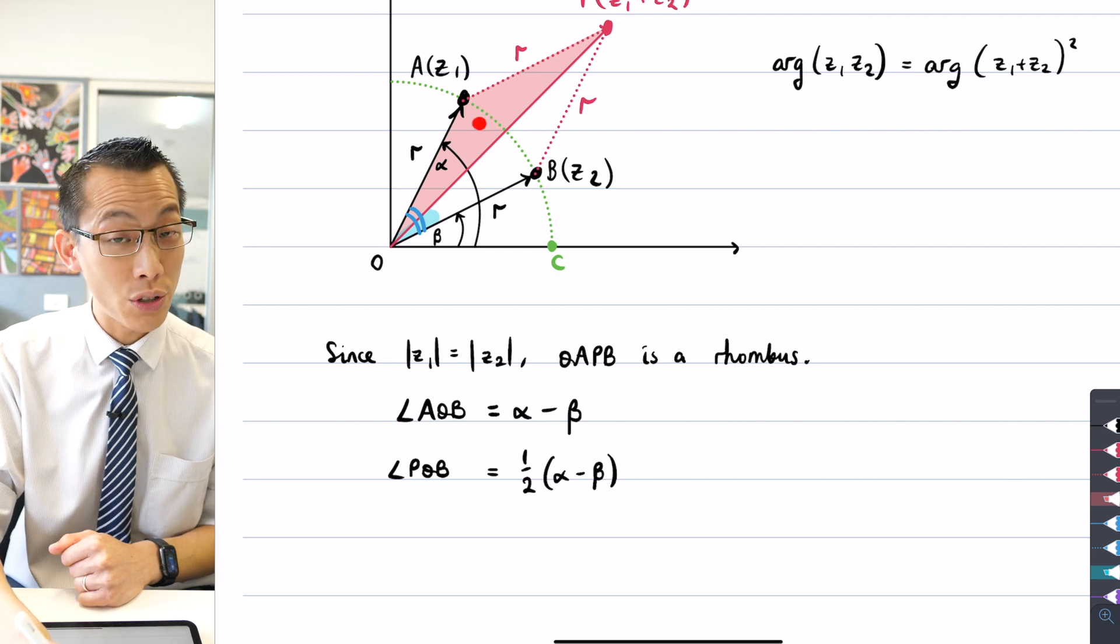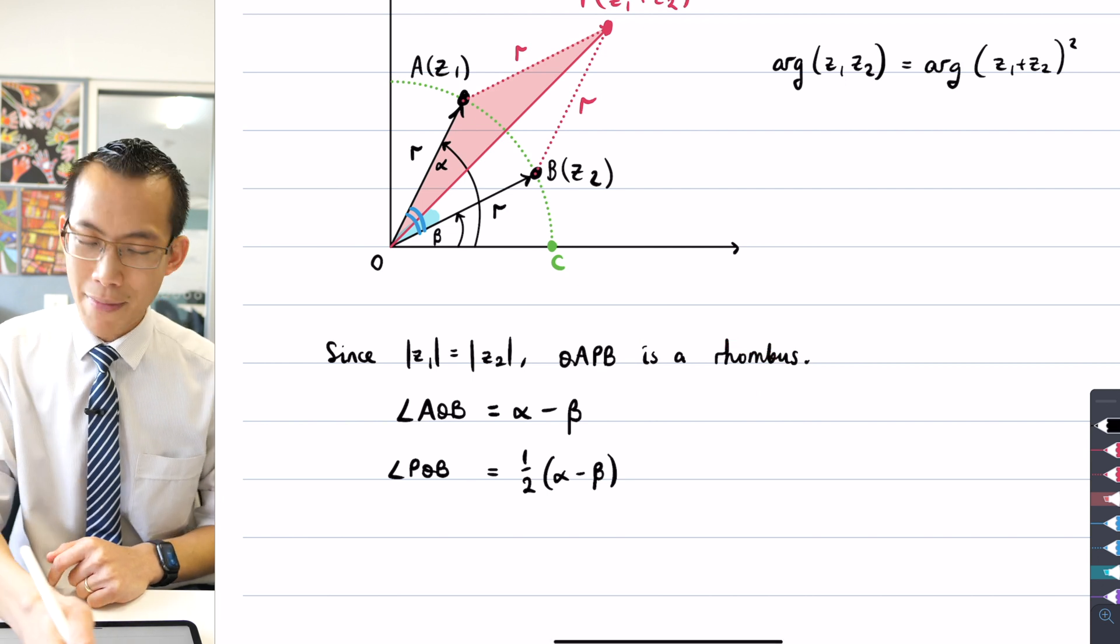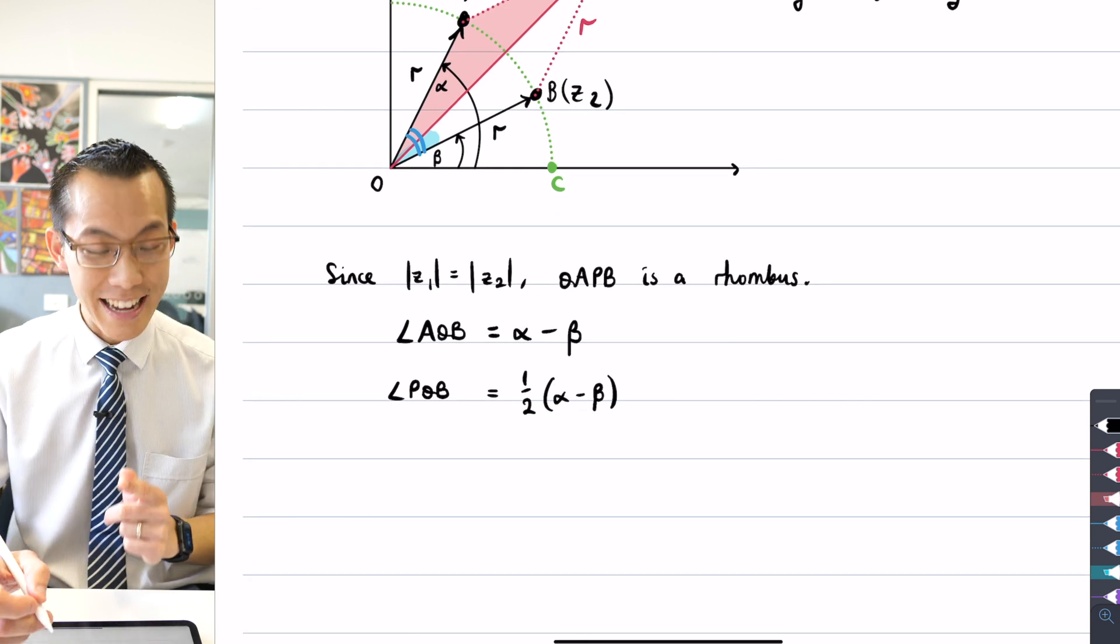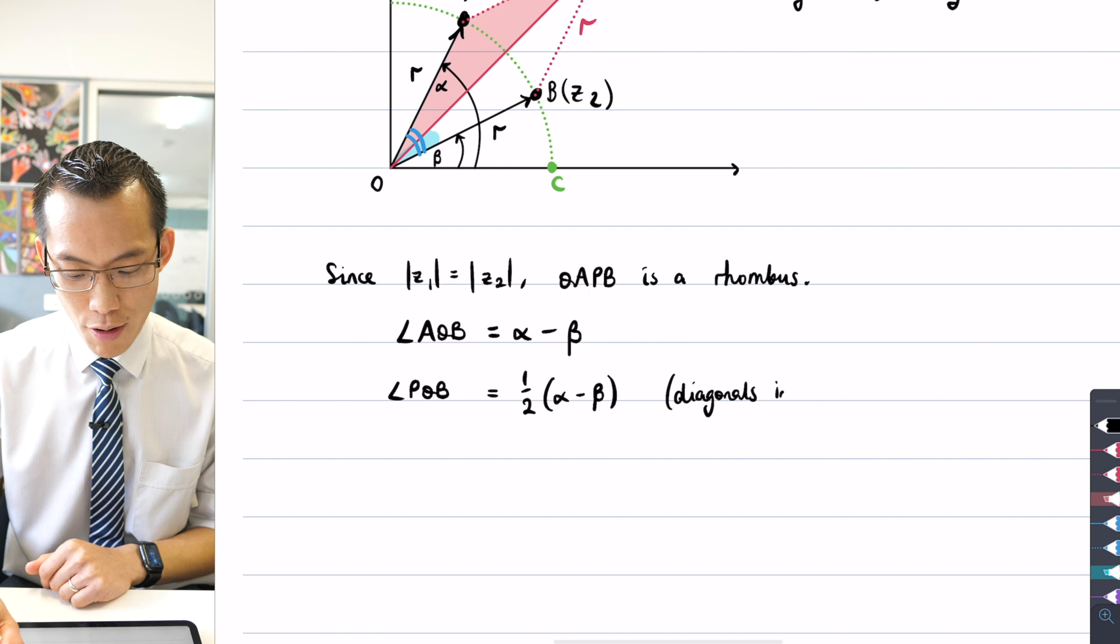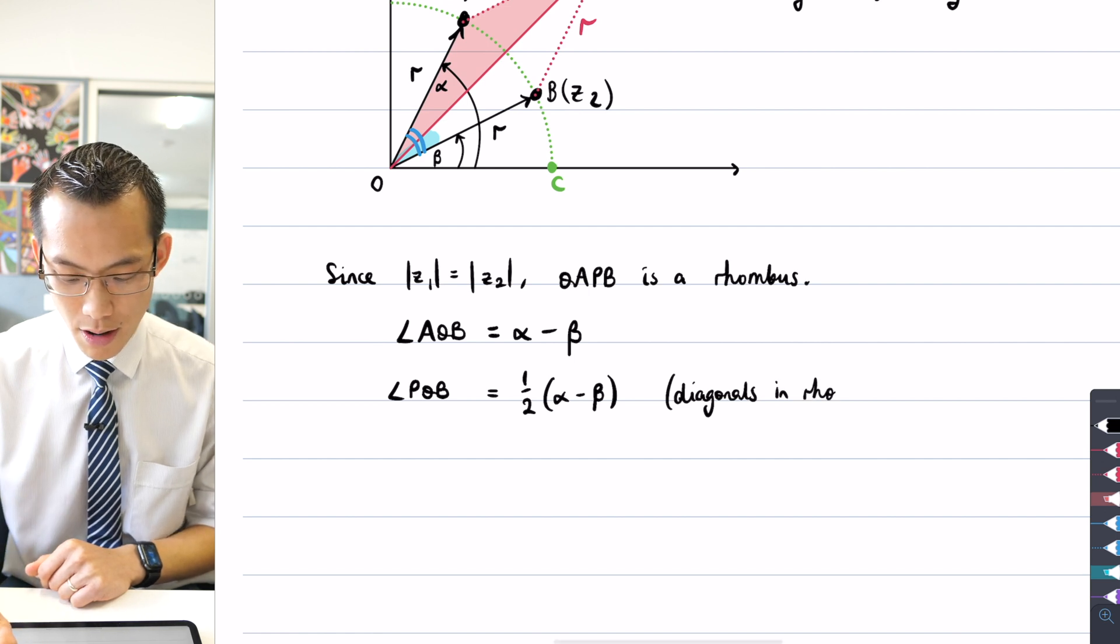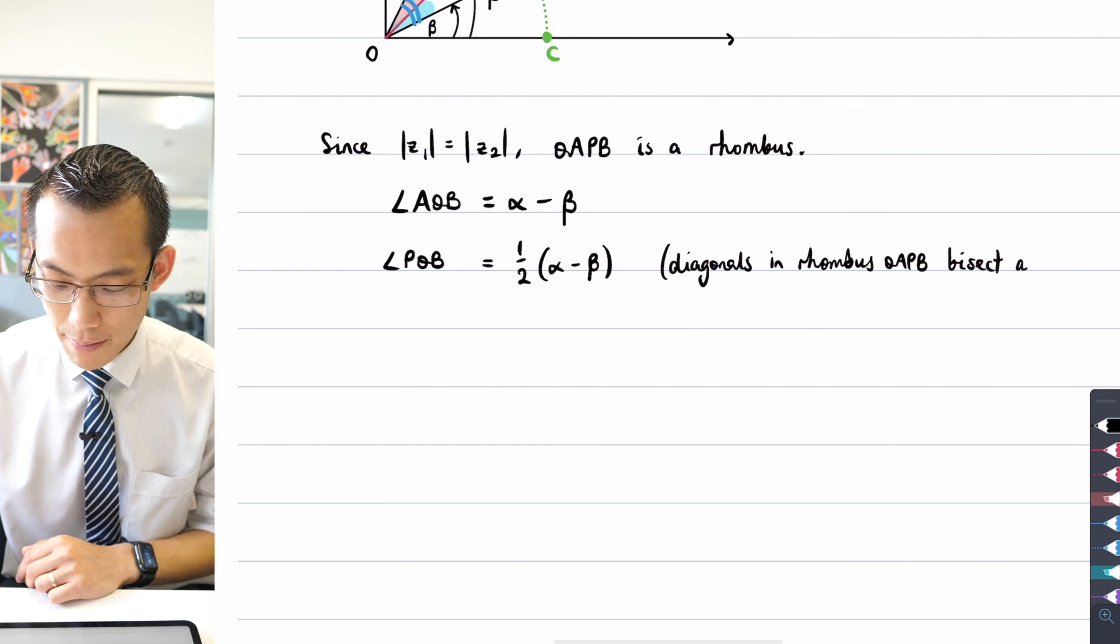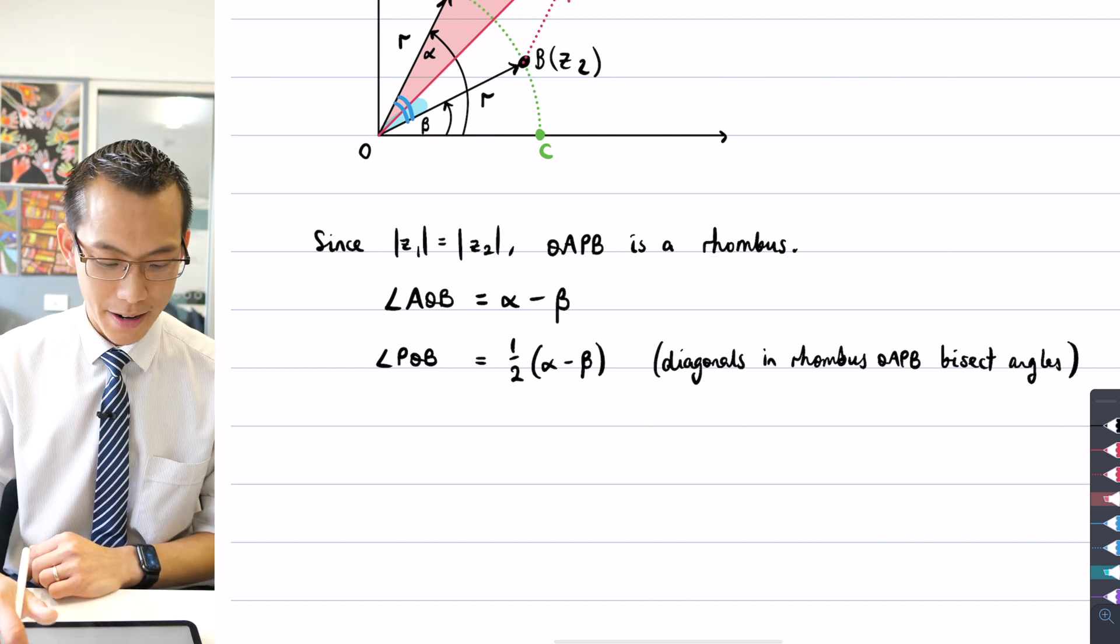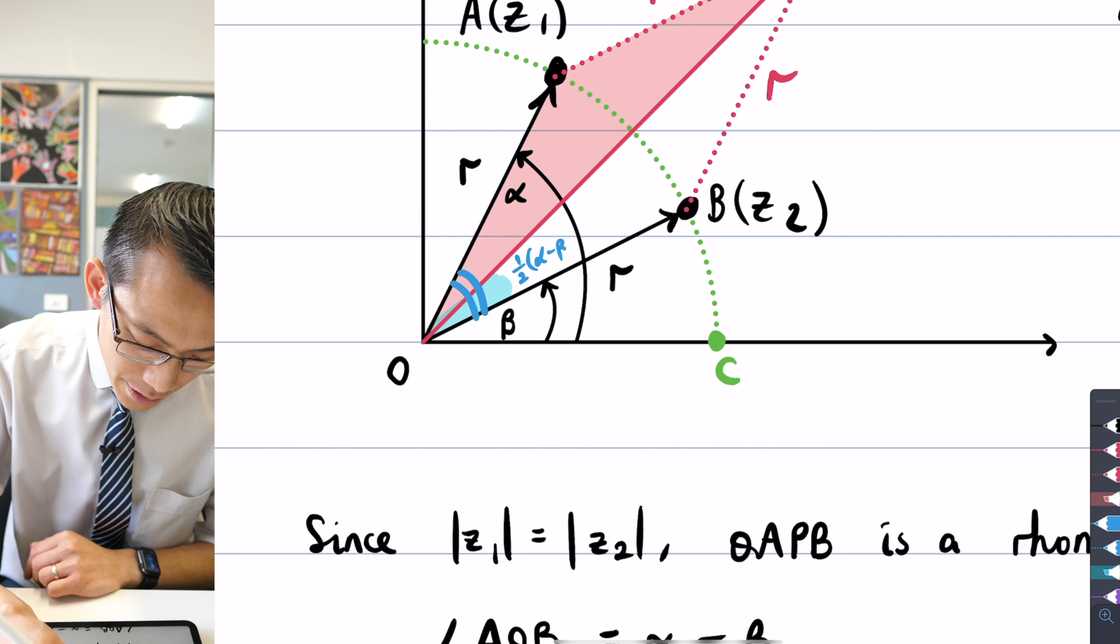Well, number one, I talked about these congruent triangles here. All angles are the same, or you could use the fact that because I've already proved that this is a rhombus. I can say it's because diagonals in a rhombus bisect the angles that they pass through. So that's why I went from alpha minus beta to half alpha minus beta. So what have I got? This little blue angle in here is half of alpha minus beta.